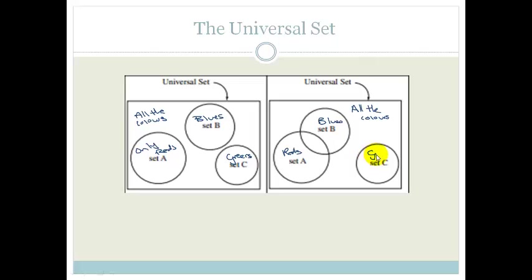and this would be the greens. And then where they overlap would be the color that could make a mixture from red and blue, which, for example, could be purple. So that is the universal set. The universal set covers everything that can encompass all of it.